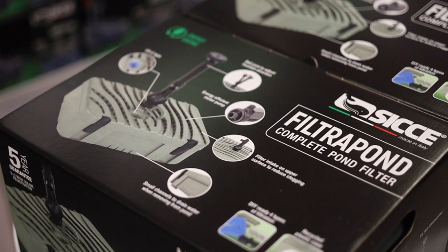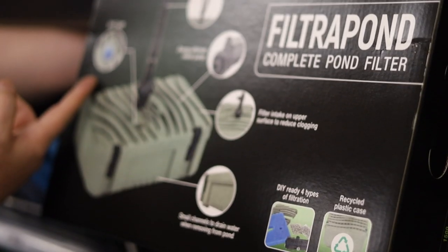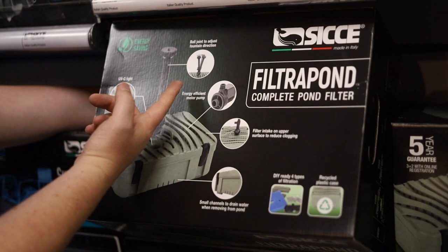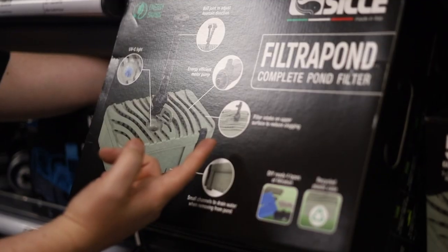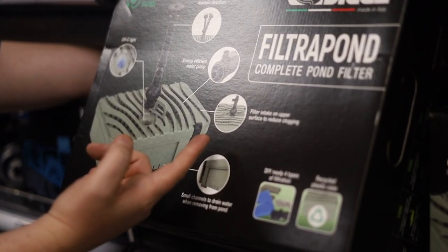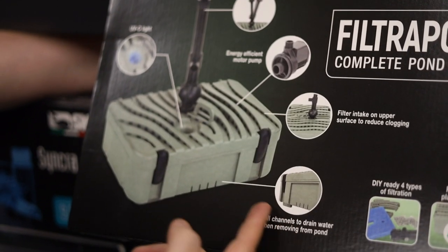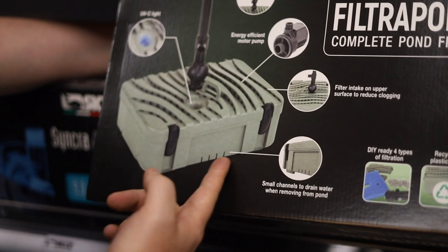Included in the filter pond are some wonderful features including the UVC light, a ball joint to adjust fountain direction, energy efficient pumps, filter intake on the upper surface that will help reduce clogging, and also small channels for drain water built into the bottom reservoir of the filter unit itself.